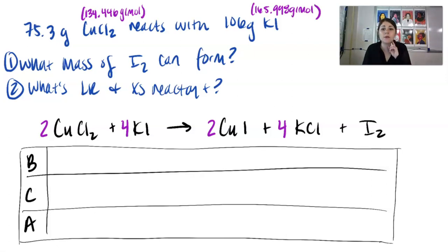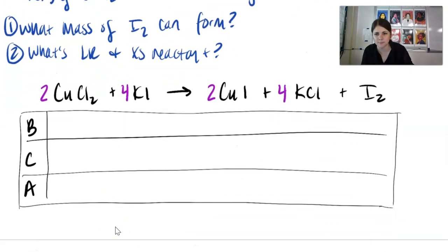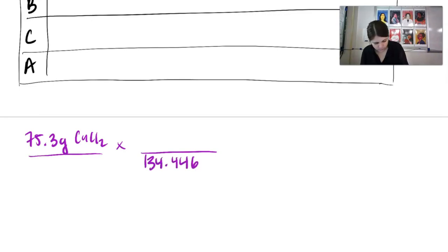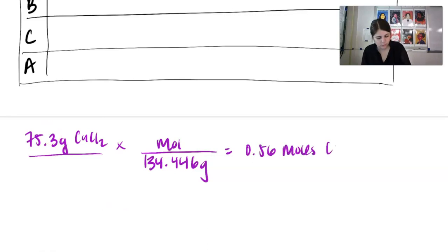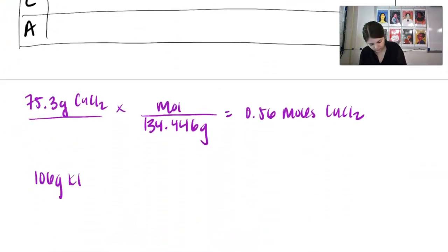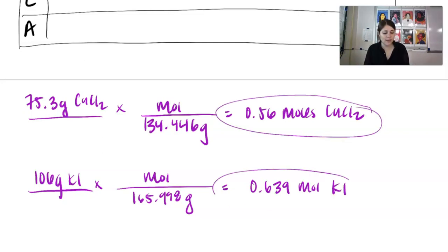We need to convert grams to moles. For 75.3 grams of copper(II) chloride, divide by 134.446 g/mol — you should get 0.56 moles of copper(II) chloride. For 106 grams of KI, divide by 165.998 g/mol — you should get 0.639 moles of KI. Now that we have our reactant information in moles, we can put that into our BCA table.